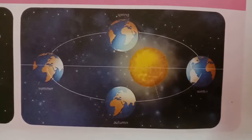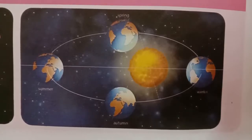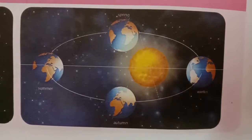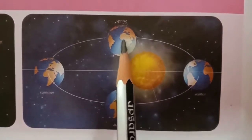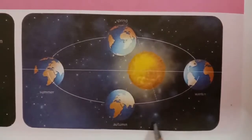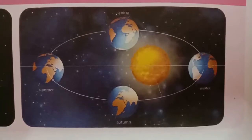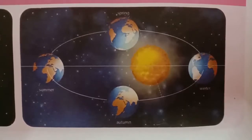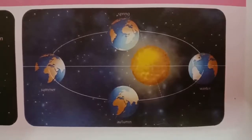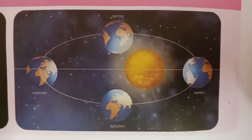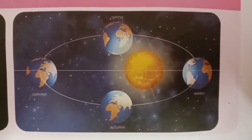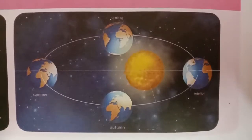A normal year has 365 days, whereas a leap year, which comes once in 4 years, has 366 days. February has 29 days in a leap year. Revolution causes different seasons like spring, summer, autumn, and winter. The leap year comes once in 4 years. The revolution of the earth brings about changes in seasons on the earth at different times of the year.